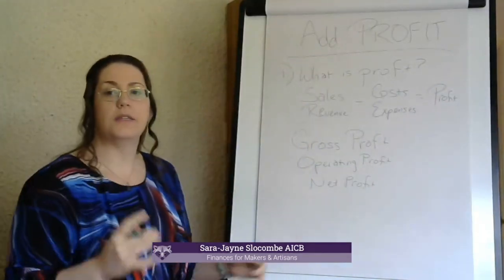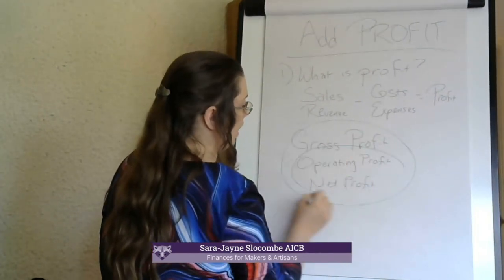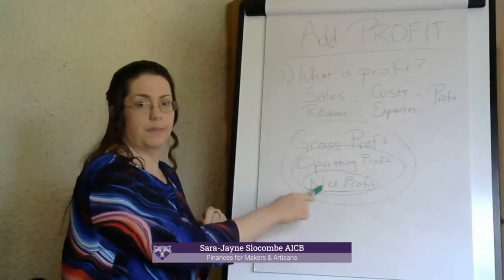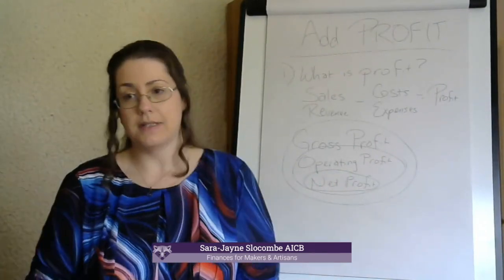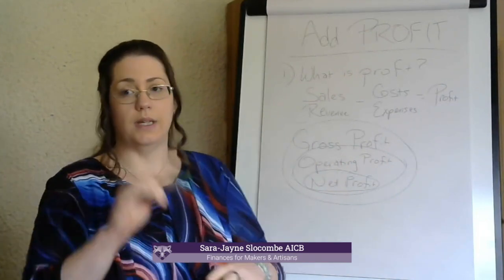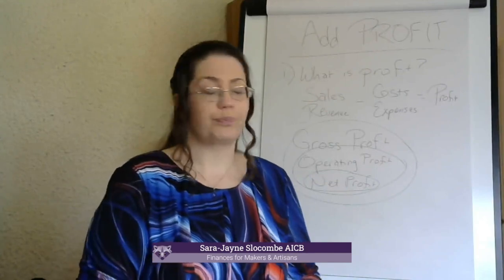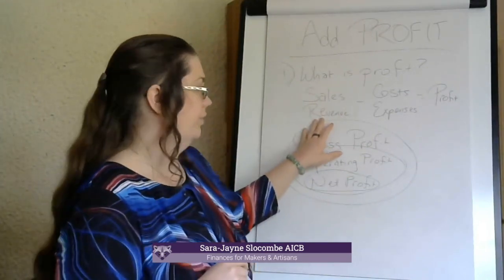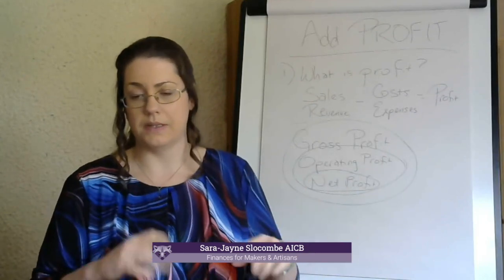These form a kind of Venn diagram — the whole thing is gross profit, a little bit less than that is operating profit, and typically quite a bit less than that is net profit. Net profit is the smallest one. Net profit is the bottom line — literally the bottom line on your profit and loss report. All of your revenue minus all of your expenses equals your net profit.